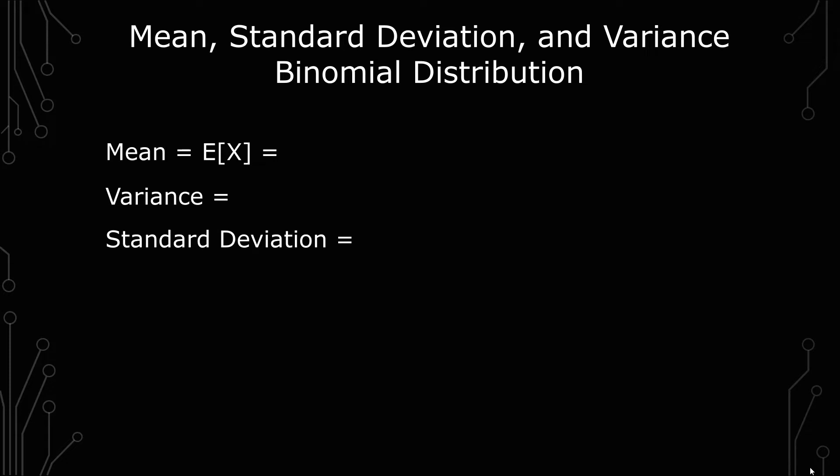The mean or expected value is n times p, where n equals total trials and p equals probability of success. The variance is n times p times 1 minus p, and the standard deviation is the square root of n times p times 1 minus p.